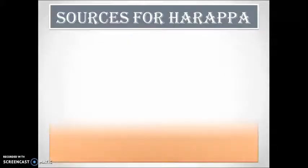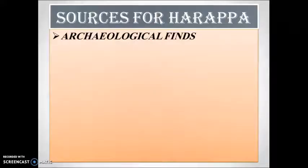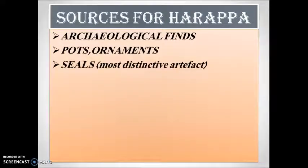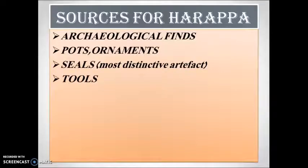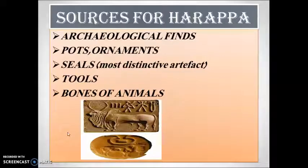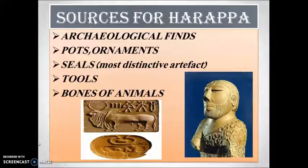Now come to the sources of Harappan civilization on which basis we reconstruct their past. Archaeological finds, known as artifacts — for example, pots, ornaments, and seals, which are one of the most distinctive and important artifacts of the Harappan civilization. We also have tools used for agriculture and other tasks, and bones of animals showing what animals they were familiar with. This seal shows a depiction of a bull, indicating they were familiar with bulls and likely used them for agriculture. This is also a sculpture of a priest-king related to political authority, which we will discuss further in the next video.